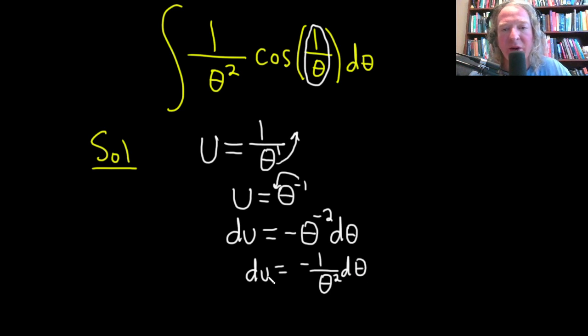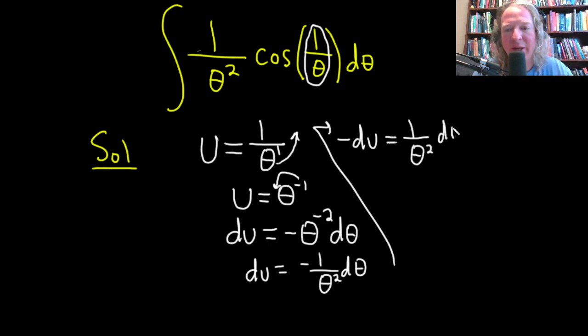And oh, we have a negative here. We don't have a negative in the integral. So if we multiply both sides by negative 1, we'll basically get negative du equals 1 over theta squared d theta.